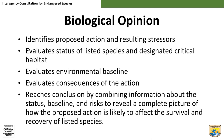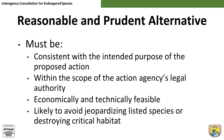The services will then state the conclusion of their jeopardy analysis. Most often, the conclusion of a biological opinion will be that the action is not likely to jeopardize listed species or destroy or adversely modify designated critical habitat. However, sometimes the services will determine that the action is likely to jeopardize listed species or likely to destroy or adversely modify designated critical habitat. If so, the next section of the biological opinion will identify an alternative action — called a reasonable and prudent alternative — that will avoid this outcome.